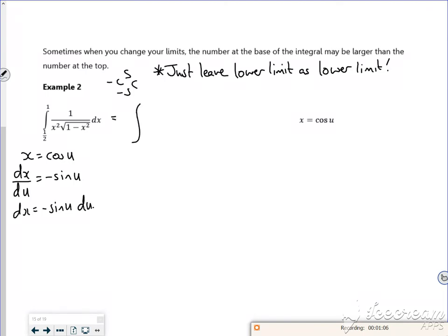Right, so that's going to become 1 over. So x squared is staying. Nope, hang on, it isn't. Let's change the x squared into cos squared. Then I've got the square root of 1 minus cos squared, and then that's times by minus sine u du.